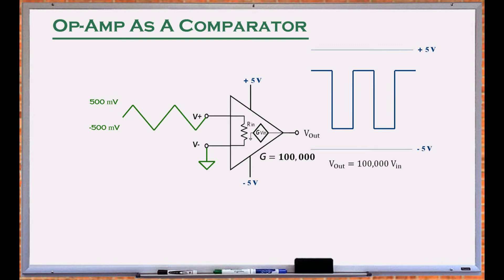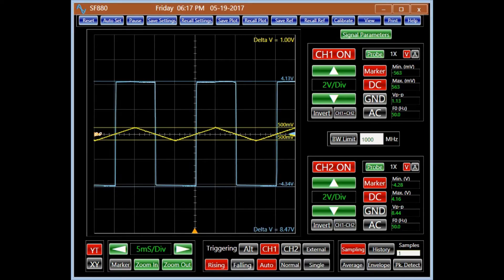In this configuration, the amplifier acts like a comparator. A mere 50 µV signal level saturates the op-amp. In practice, the saturation voltages are below the voltage supply levels.